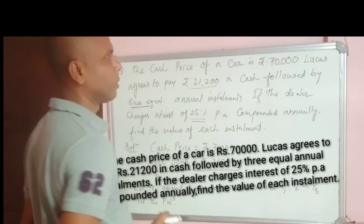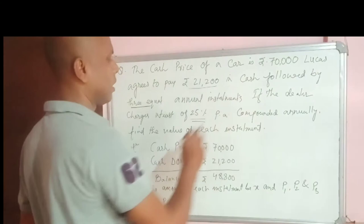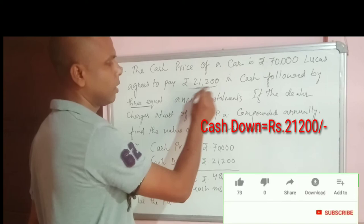If the dealer charges interest of 25% per annum compounded annually find the value of each installment. So in this case let us first of all write the cash price of the car. So cash price is 70,000. Cash down is 21,000. Now we have balance 48,800.